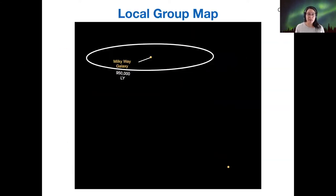In this map, the Milky Way galaxy is plotted here as this orange point. There should be a word that says spirals here—all the orange points are supposed to be spiral galaxies on this map. The radius of this circle is 950,000 light years.